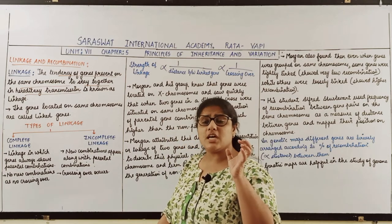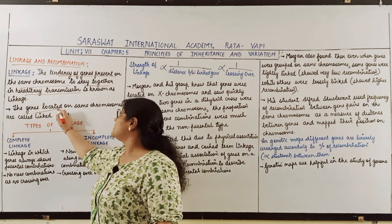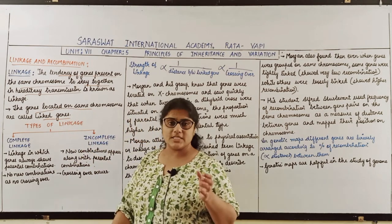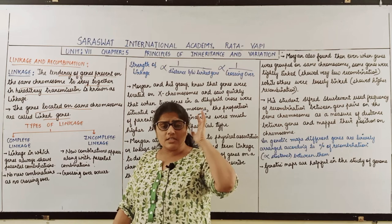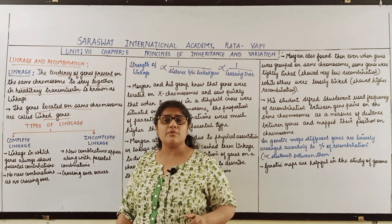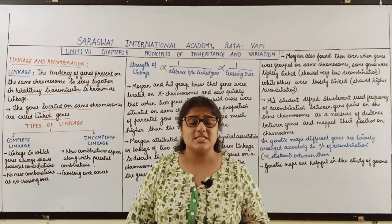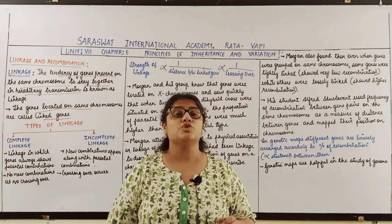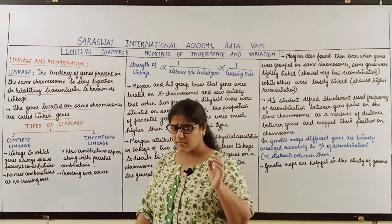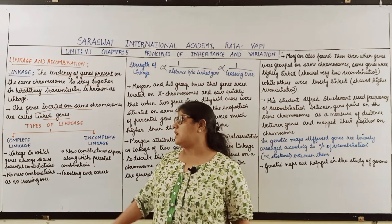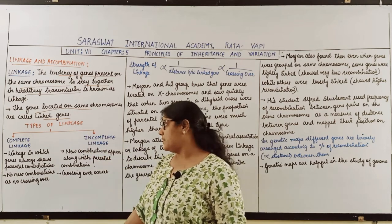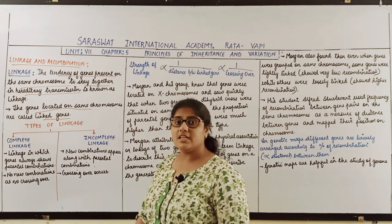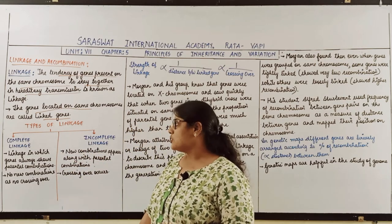Genes located on the same chromosomes are called linked genes, whereas genes located on different chromosomes are called unlinked genes. There are two types of linkage: complete linkage and incomplete linkage.